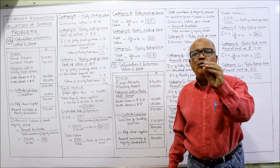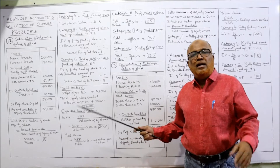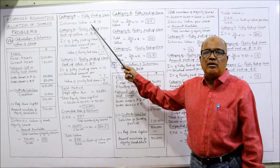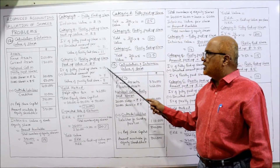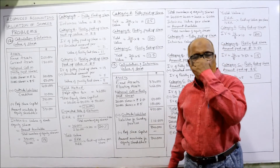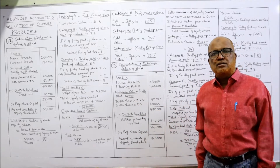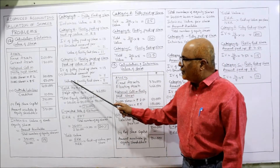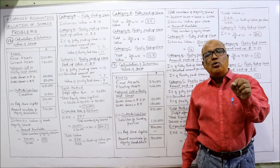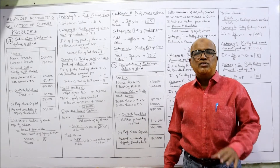Category C: partly paid up share on which 5 rupees are called and paid up. Remaining 5 rupees are uncalled. We deduct 5 rupees from the intrinsic value of the fully paid up share: 13 minus 5 = 8 rupees as the intrinsic value of this partly paid share. That is the end of the intrinsic value calculation. We are now also required to calculate the yield value.